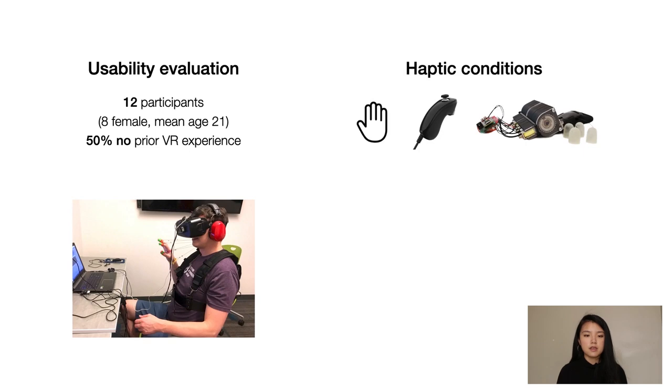We included three haptic conditions in our qualitative study. The first was bare hands. As an additional baseline, we included a controller condition with vibration feedback on hand collision. Our third and final condition is Virality, using our seven-string implementation worn on the right shoulder.